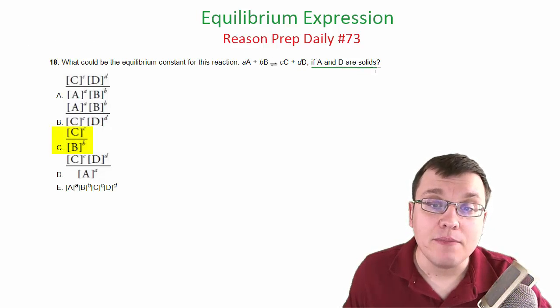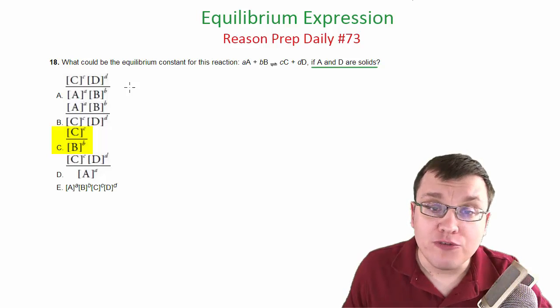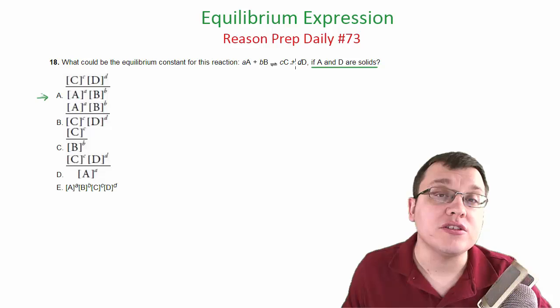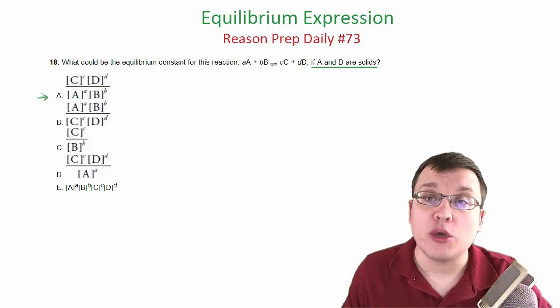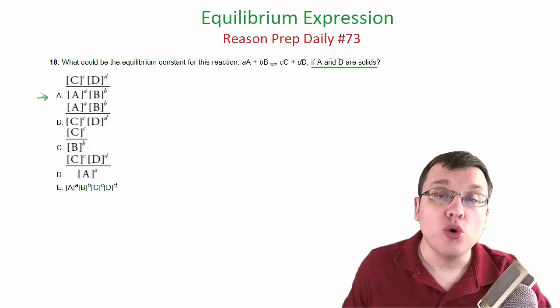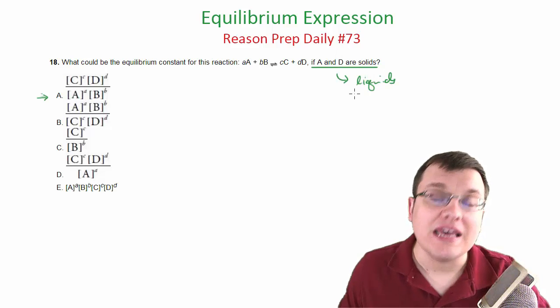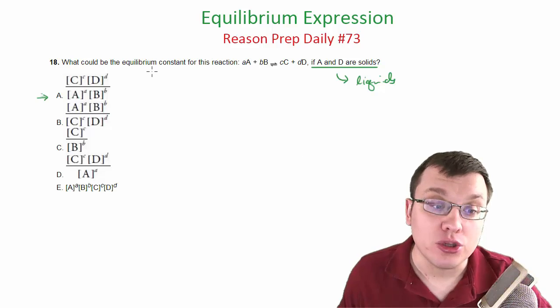So this is the key part of the question. Because if you put a wrong answer, perhaps you put A, thinking that all of these terms become part of the equilibrium expression. But since A and D are solids, we do not count solids or liquids in our equilibrium expression. We do not include it.